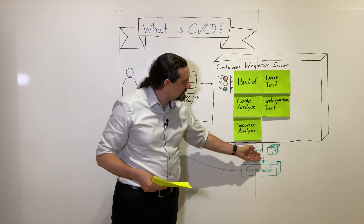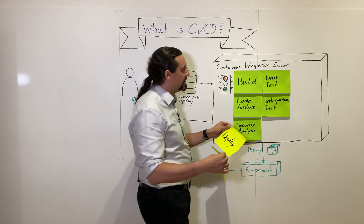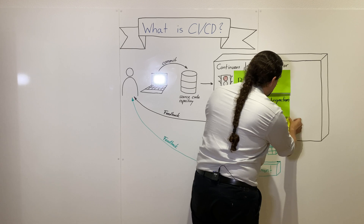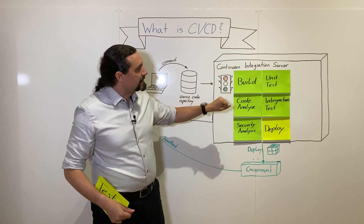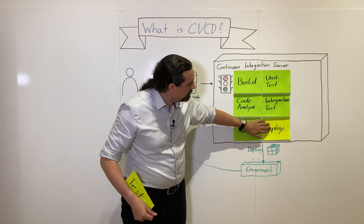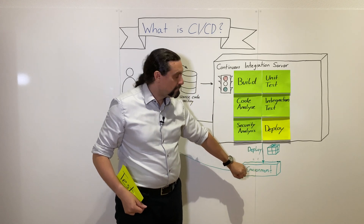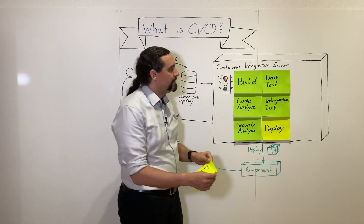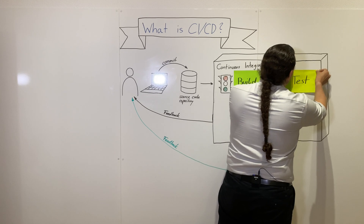And this is now shown here in green. With continuous delivery, our continuous integration server will deploy the software package to a production-like environment and then execute tests like user interface tests on this production-like environment.